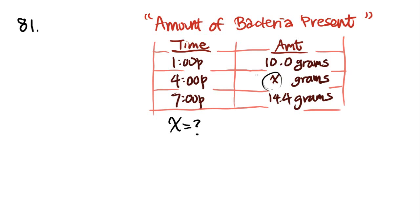Now, if you didn't know how to do this problem and you just looked at it, you might see that it's 10 grams at 1, and it's 14.4 at 7. Therefore, X equals 12.2 because it's in the middle. Ironically, answer choice C is 12.2. But if you were to pick this answer, it would be absolutely wrong. This is one of those tricky questions where you really have to know the rules and how to do this type of increasing bacteria problem.